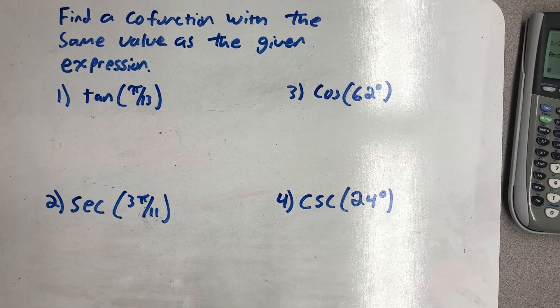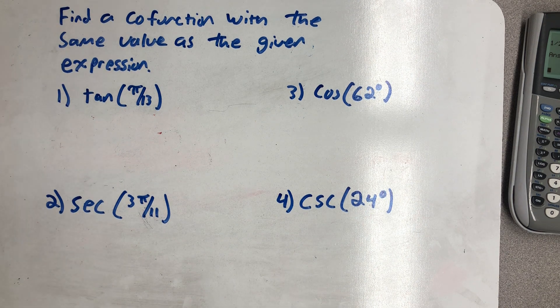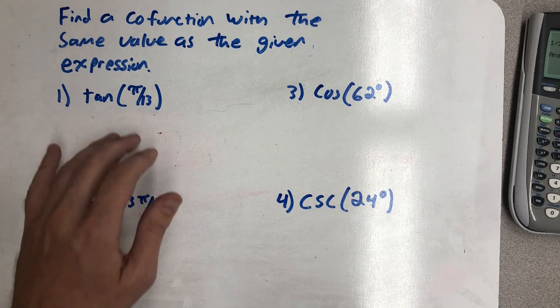Here I'm given four trigonometric expressions, and I've been asked to find a cofunction with the same value as the given expression. So I have two jobs. The first thing I need to do is to write down the appropriate cofunction.